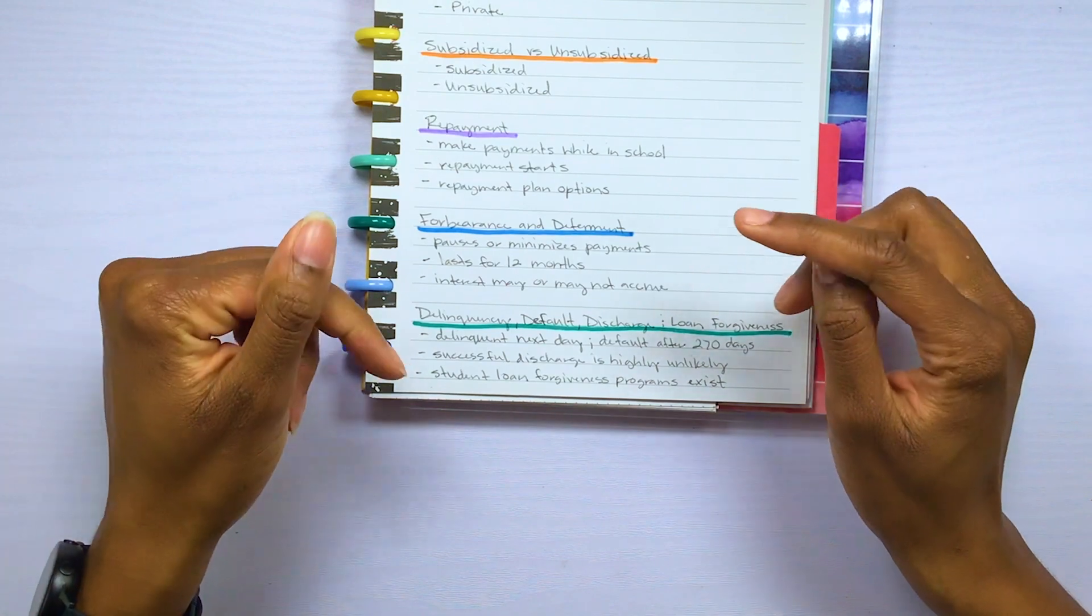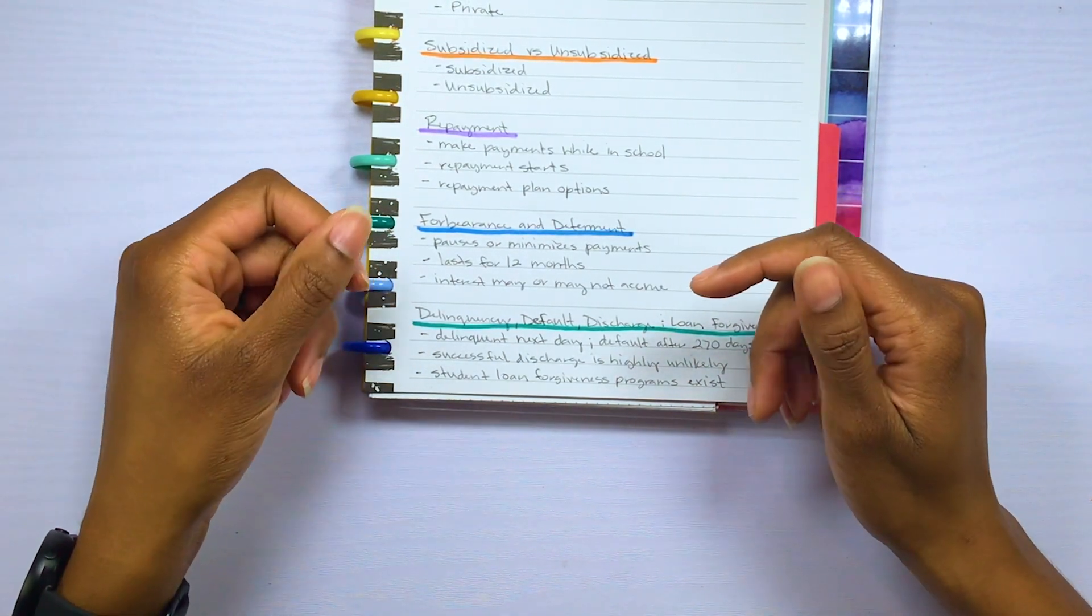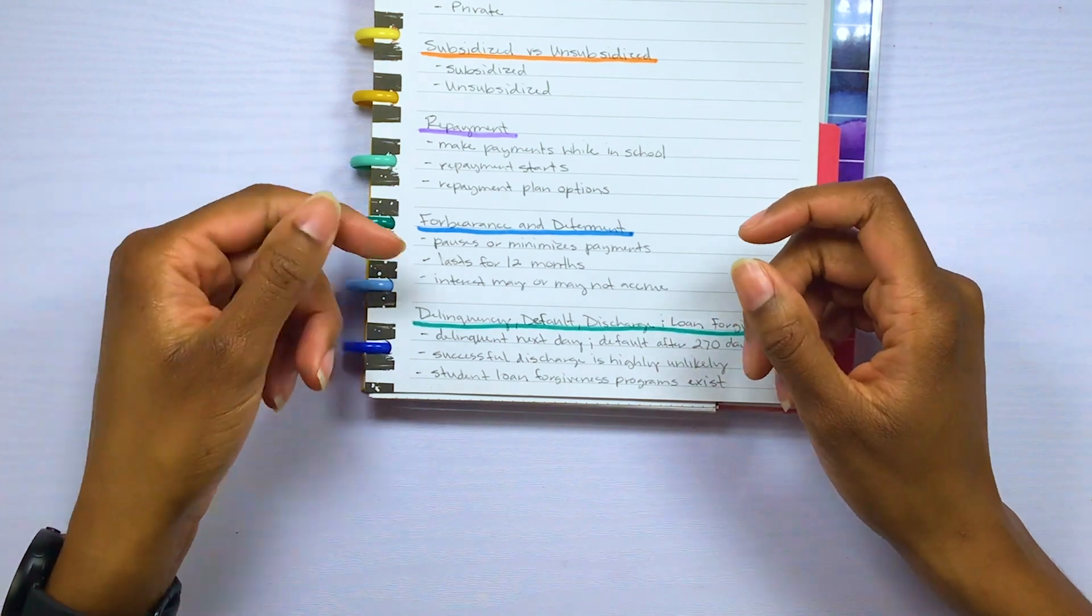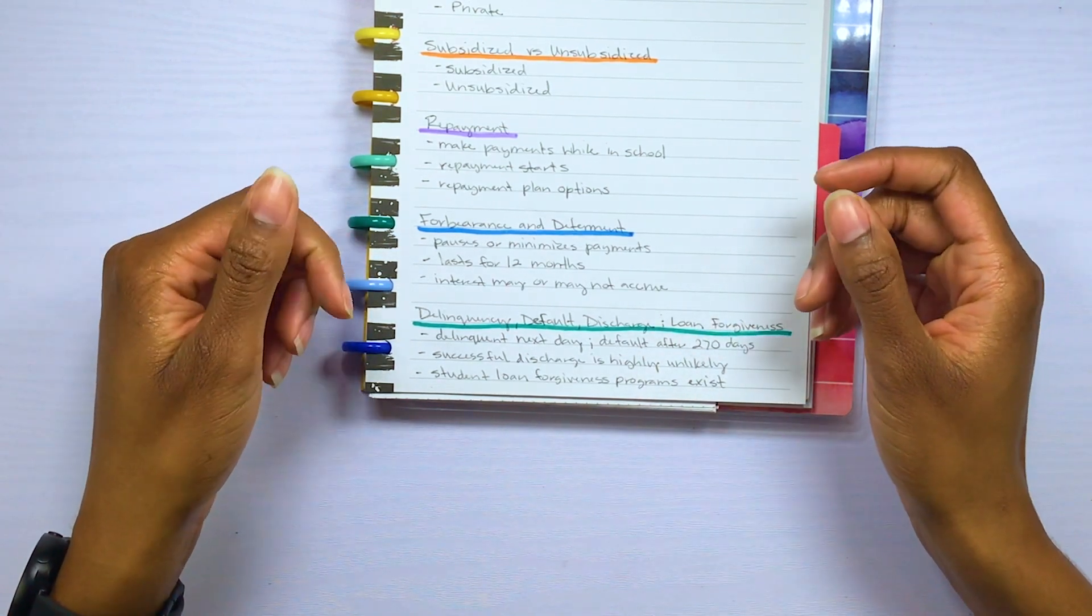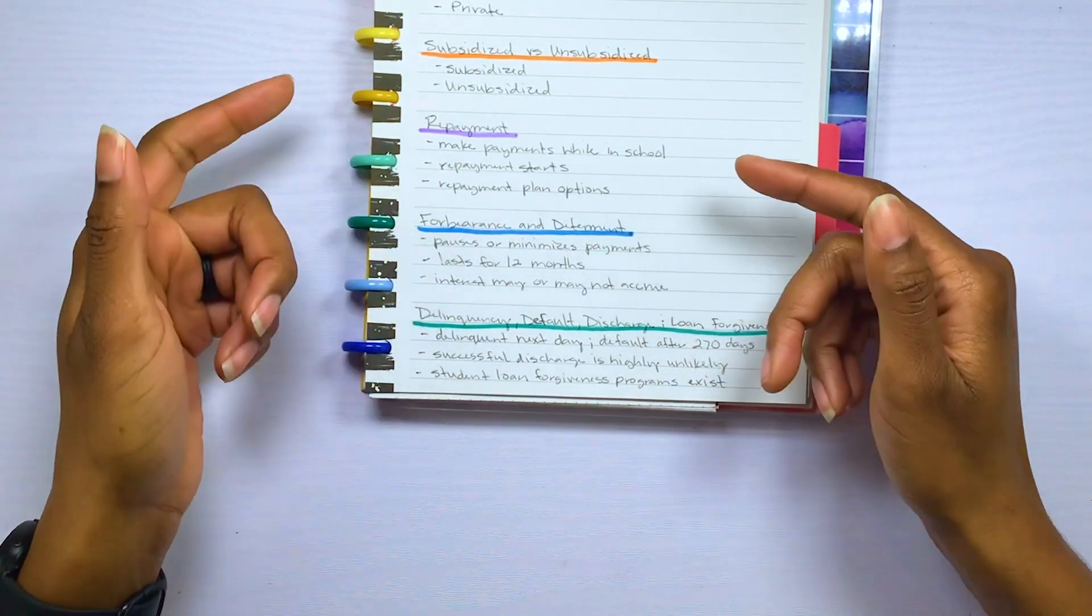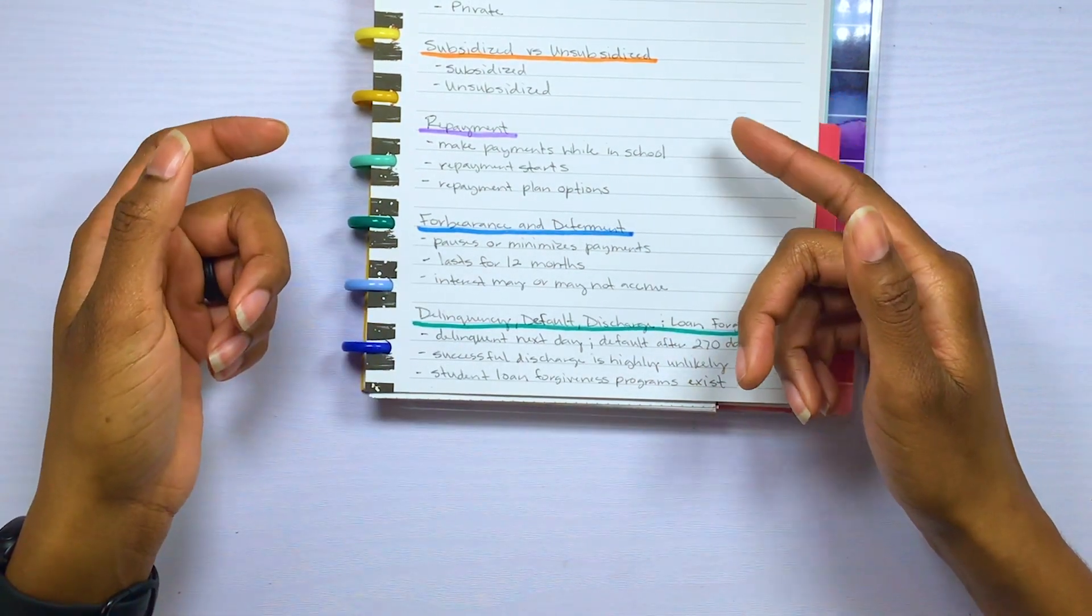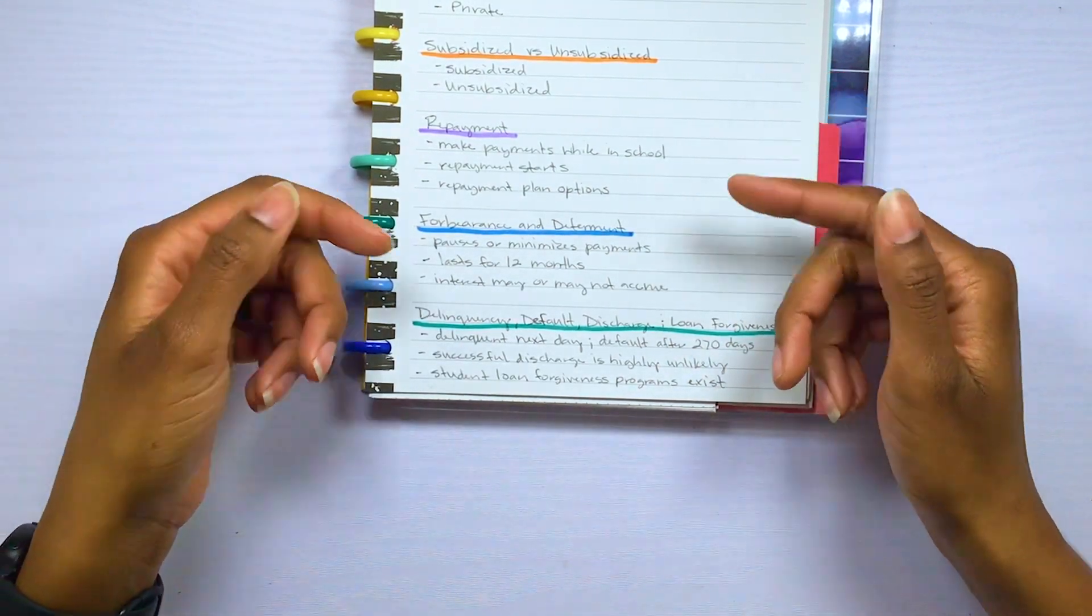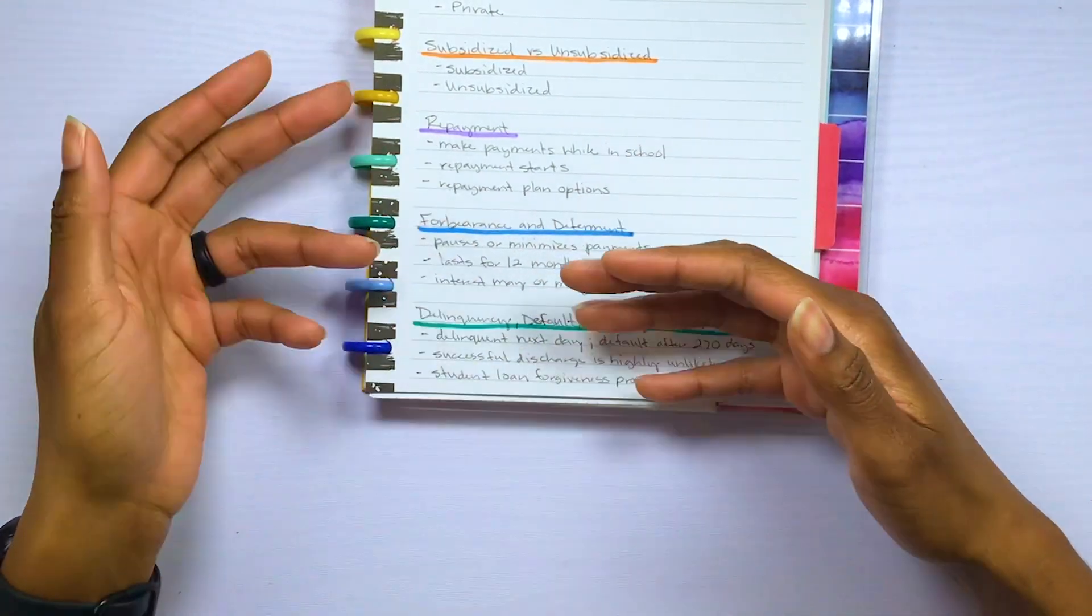Also know that there are student loan forgiveness programs out there, but the requirements can be demanding and complicated. So definitely seek professional advice before getting student loans if you are in the mindset that they will be forgiven. So especially you aspiring teachers out there, definitely talk to your student loan servicer before taking out the loans or anytime you take on more loans.